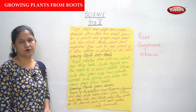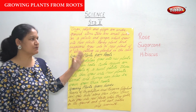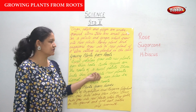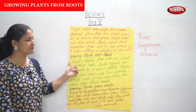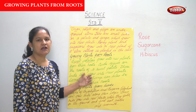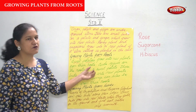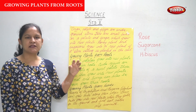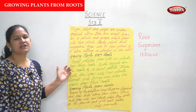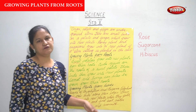Carrot and turnip can also be grown from their roots. So examples of growing plants from roots: sweet potatoes grow into new plants from their roots, buds appear on the roots of a sweet potato and these buds later grow into new plants. The carrot and turnip can also be grown from their roots.